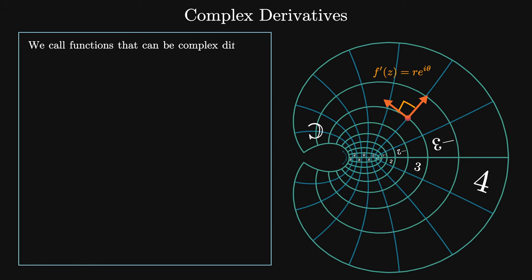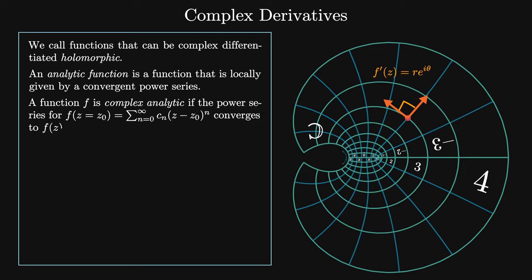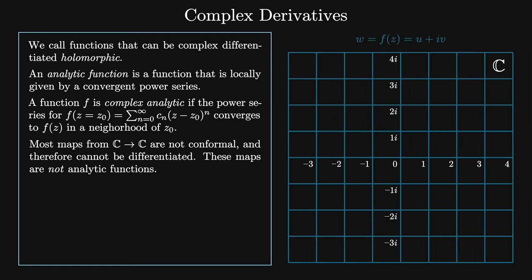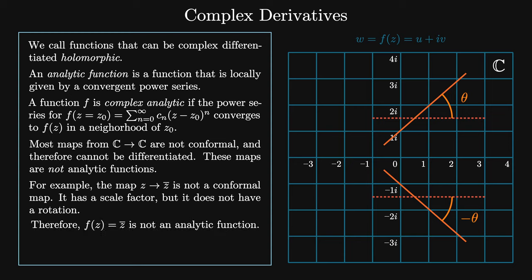An analytic function is one locally given by a convergent power series. A function f is complex analytic if the power series f at z = z₀, which equals the sum from n = 0 to ∞ of cₙ(z − z₀)ⁿ, converges to f(z) in a neighborhood of z₀. Most maps from the complex plane to the complex plane are not conformal and therefore cannot be differentiated — they are not analytic. For example, the map z goes to the complex conjugate of z is not conformal: it has a scale factor but no well-defined rotation. Therefore f(z) = z̄ is not analytic. Maps like this that take theta to minus theta are called anticonformal.